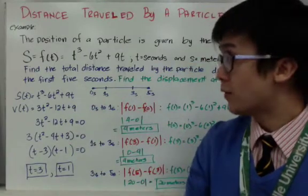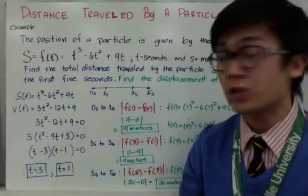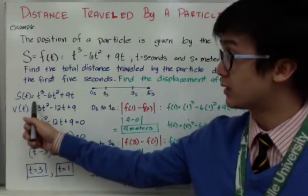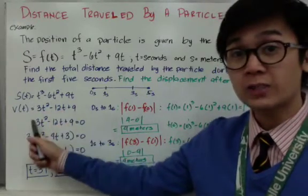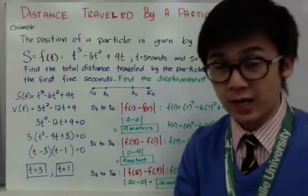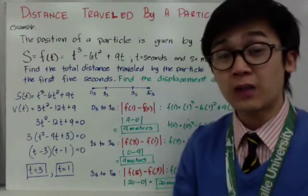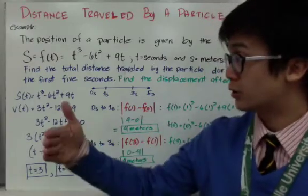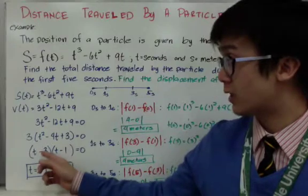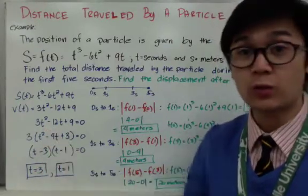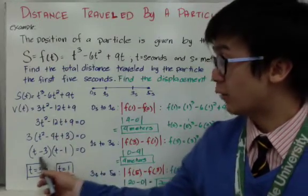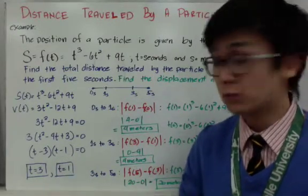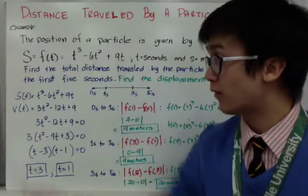To answer the first question, we find the velocity, which is the first derivative of the position function. The derivative of t cubed minus 6t squared plus 9t gives 3t squared minus 12t plus 9. Setting velocity equal to zero and factoring gives two factors: (t minus 1) and (t minus 3). By the zero product property, t equals 1 and t equals 3 are our critical values.